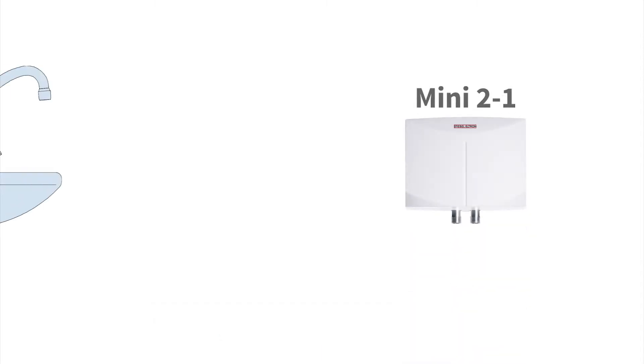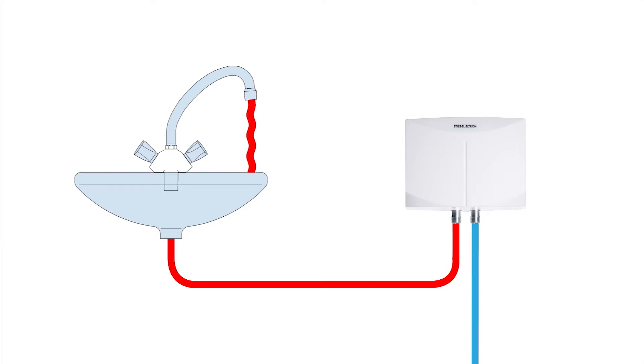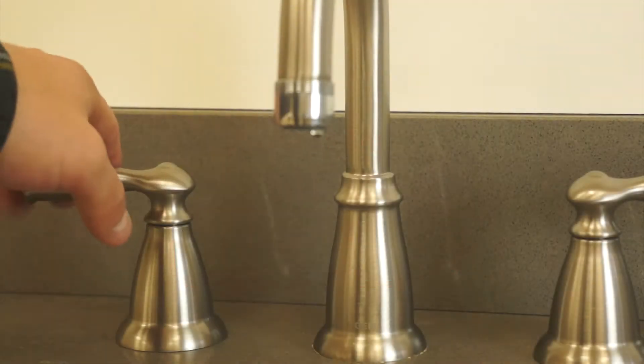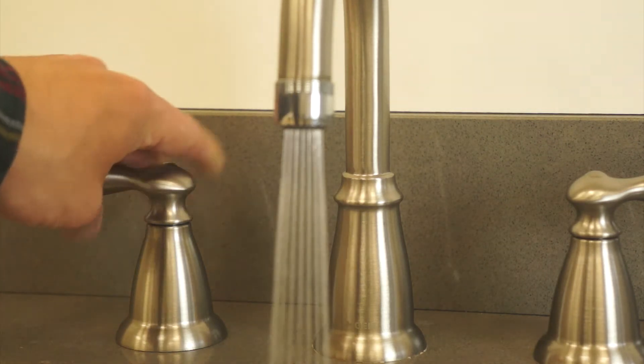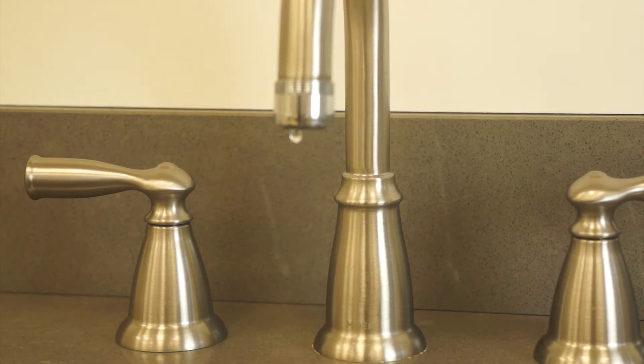Our smallest tankless water heater, the Mini 2-1, is restricted to a flow rate of 0.32 gallons per minute. This model is only intended for hand washing use with a single very low flow lavatory faucet. The Mini 2-1 is our least powerful tankless water heater but it is very capable for the task it's designed to do.